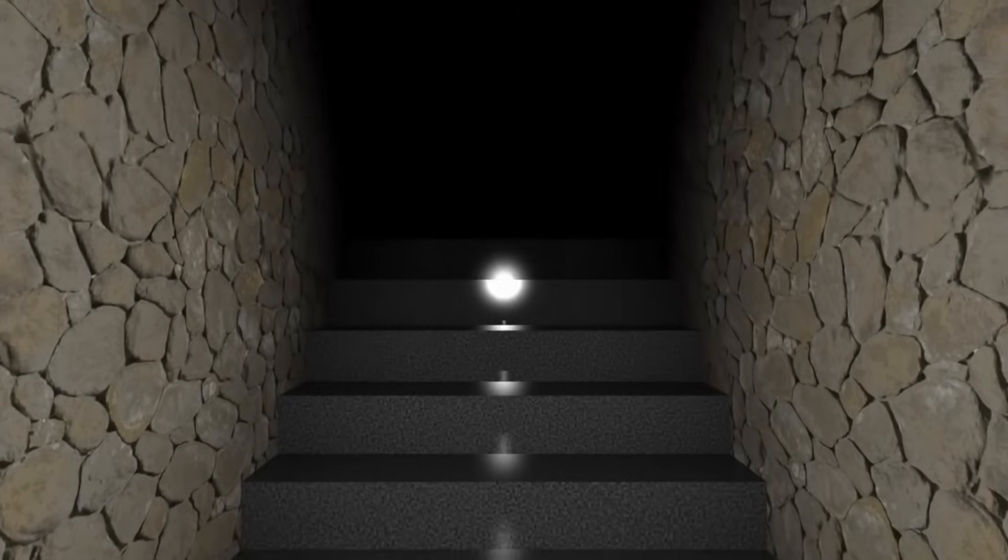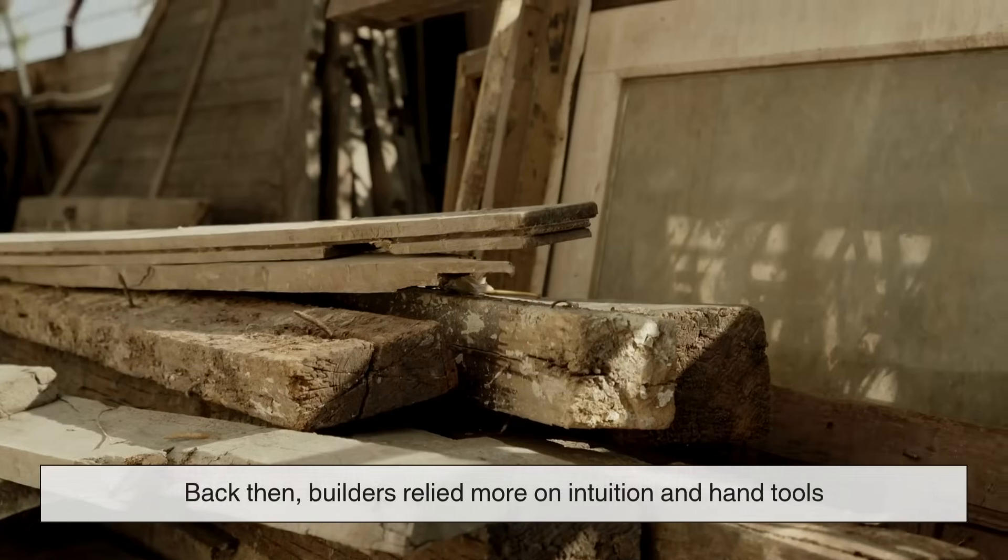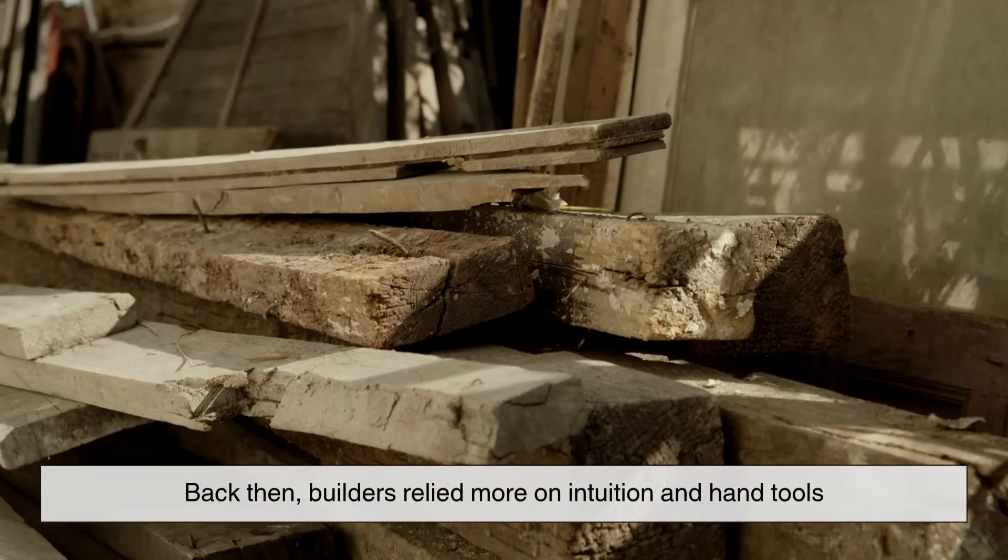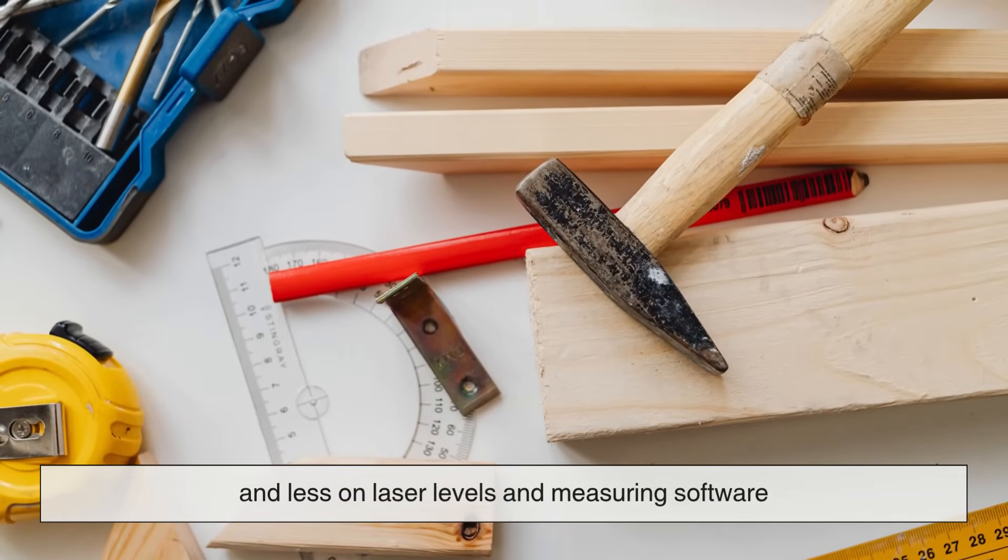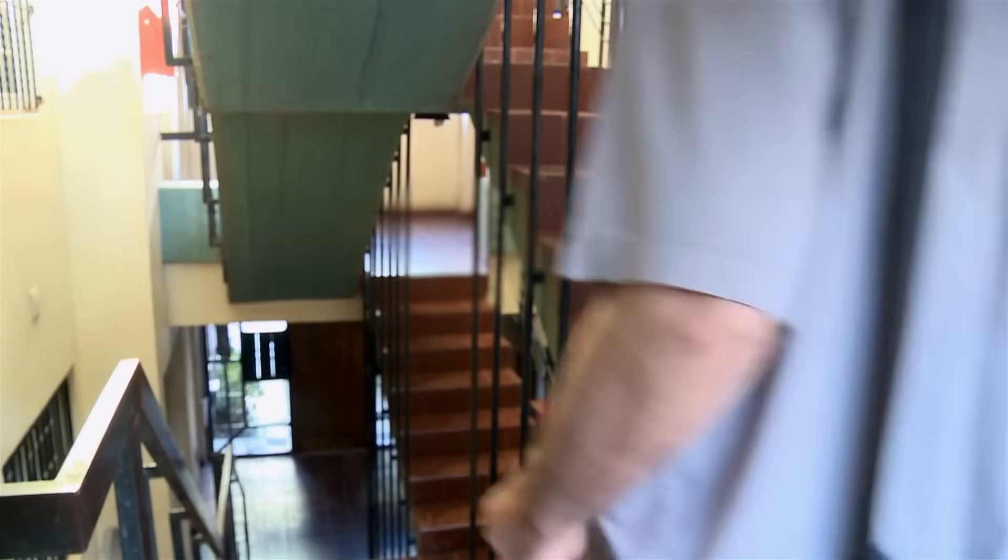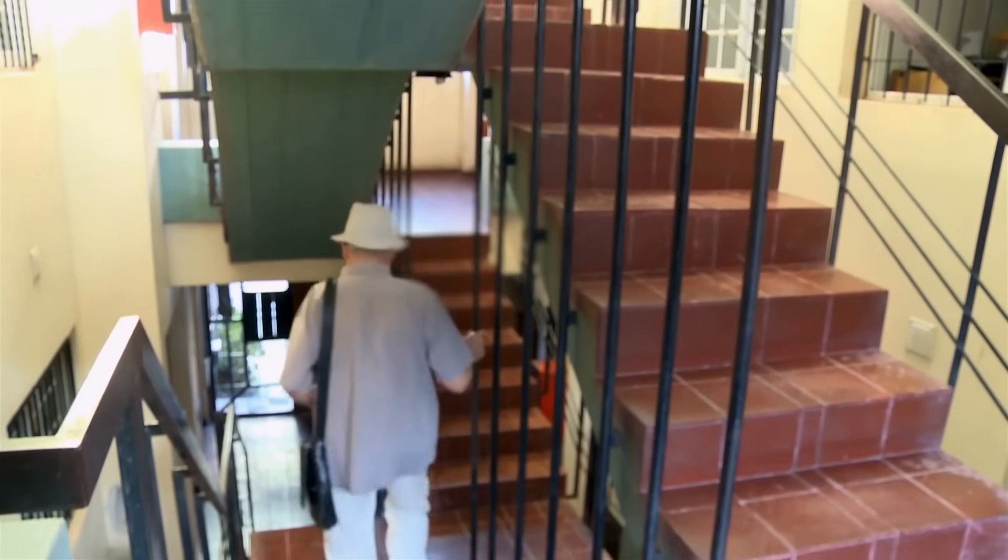In older buildings, staircases might have been built before modern codes were in place. Back then, builders relied more on intuition and hand tools, and less on laser levels and measuring software. The result? Slight inconsistencies that have stood the test of time, but might trip you up today.